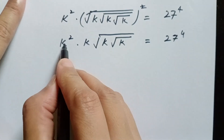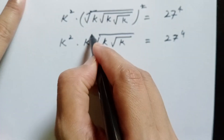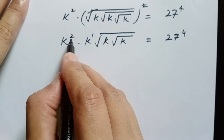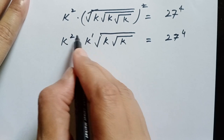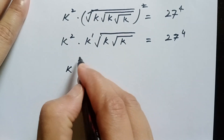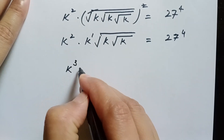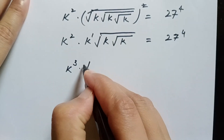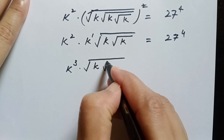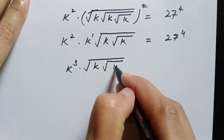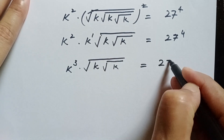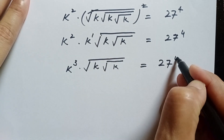So this k has power 1, so we can add these powers: 2 plus 1 is 3. So we will write k to the power of 3 times square root of k times square root of k is equal to 27 to the power of 4.